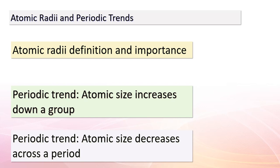Today, we're uncovering the mysteries of atomic radii and the intriguing patterns that emerge. Atomic radii — the measurement of an atom's size — are crucial in understanding an element's behavior. As we move down a group, atomic size increases due to the addition of new electron shells, which leads to increased electron shielding. On the other hand, as we traverse across a period, atomic size decreases due to the growing positive charge of the nucleus, which draws electrons closer.